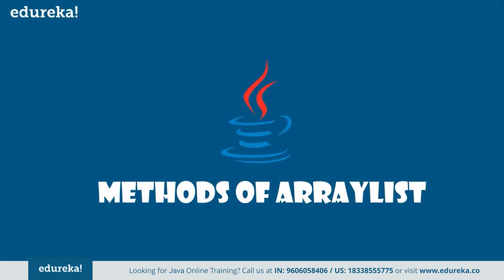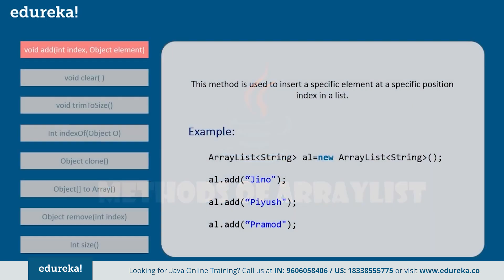Now let's dive into the various methods supported by ArrayList. The first is the add method — this method is used to add elements to the ArrayList, inserting a specific element at a specific position index in a list. For example, you can create an ArrayList and keep adding elements using the add method. We will demonstrate all the methods of ArrayList in Eclipse after covering the concepts.